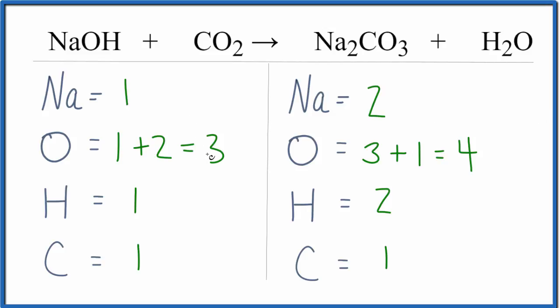Whenever I have this odd number here, I like to get that to be an even number. And it looks like the best way to do that is if I could change this to a two, two plus two would give me four. So I'm going to put a two in front of the NaOH, and then I'm going to update all of the NaOH and H. So I have one hydrogen times two. That'll give me the two hydrogens.